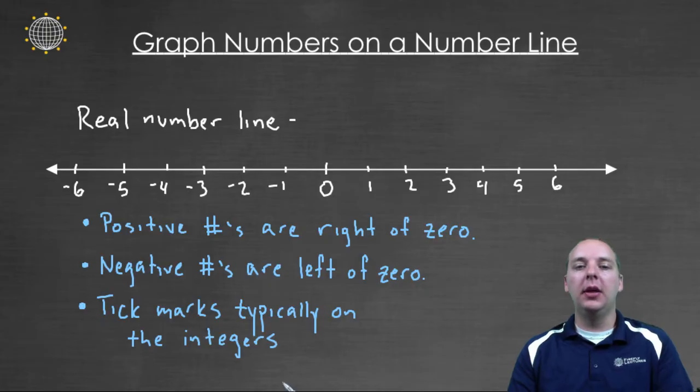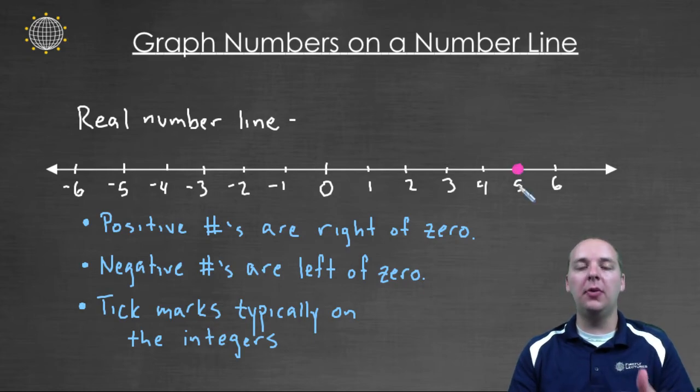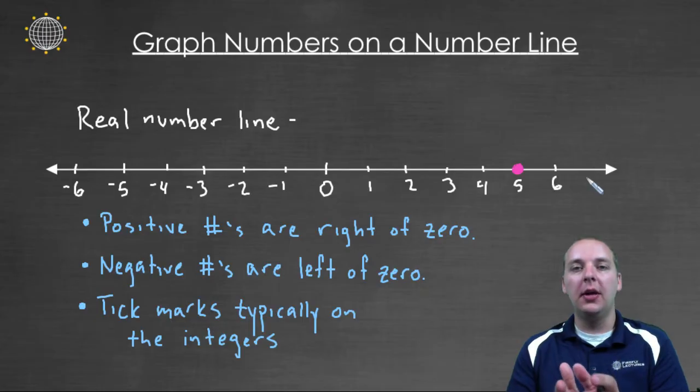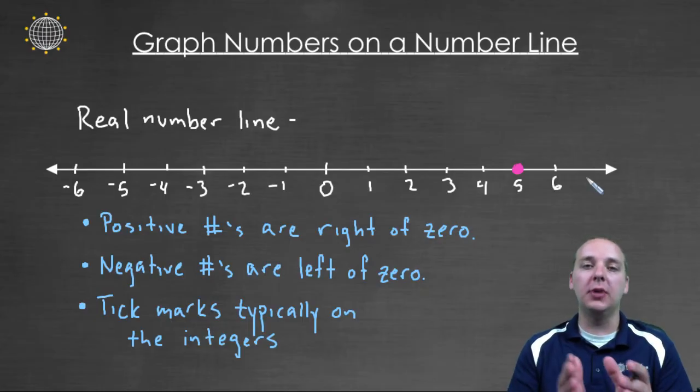For example, if we plotted a number at five, we would go out to five, we would put a dot, and then we've plotted five, we've shown the number five on the real number line, especially showing where it is in relation to other numbers. For example, I know that it's greater than zero, but it's less than six, because it's after zero, but it's before six, as you read the number line from the left to the right.